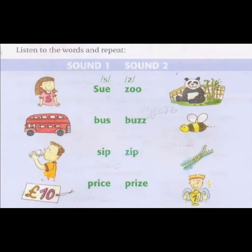I will pronounce sound one first, then sound two. Listen to words and repeat. Soo, zoo, zoo, zoo.